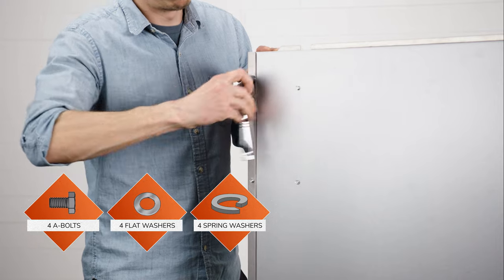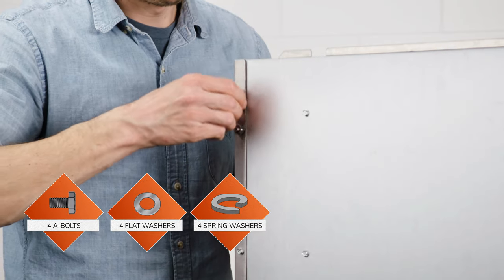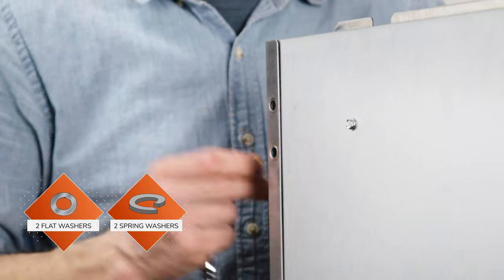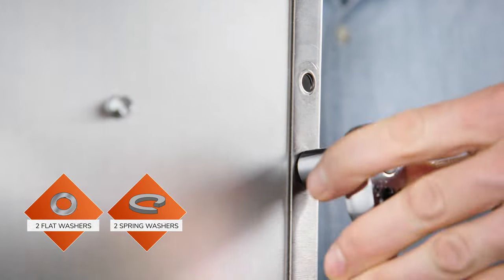First, remove the four A-bolts, the four flat washers, and the four spring washers from the backside of the backsplash. Keep two flat washers and two spring washers to use later during assembly.